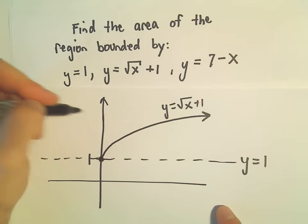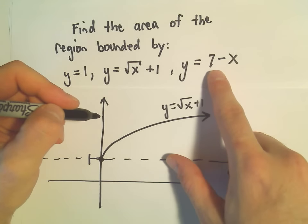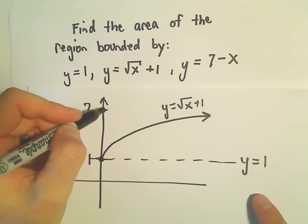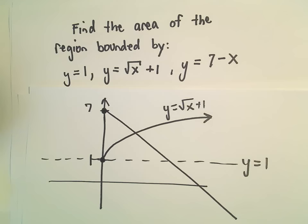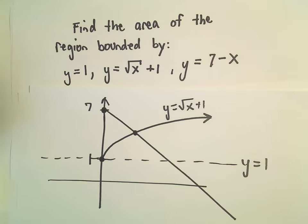So probably not to scale here. And then when we graph 7 minus x, that's going to be a straight line with a y-intercept of positive 7. And then it has a slope of negative 1, so it's just going to go down through there. And we want to find the area of this region sort of trapped inside of here.